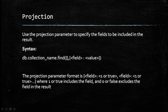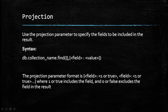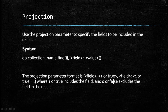Now we will understand projection. Use the projection parameter to specify the fields to be included in the result. The syntax is: db dot collection name, then find, then the first parameter is the query and the second parameter is the field name with a boolean value. The projection parameter format is: field name, then value of 1 or true to include the field, and 0 or false to exclude the field in the result.